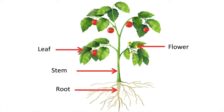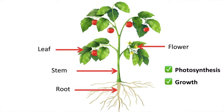The leaves of a plant are very important as this is where the process of photosynthesis takes place. Photosynthesis is the process in which leaves use sunlight, carbon dioxide and water to create glucose and oxygen. This is essential for the plant to survive and to grow. Therefore, the leaves are required for nutrition.